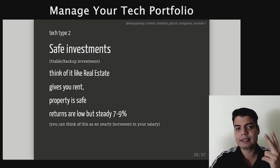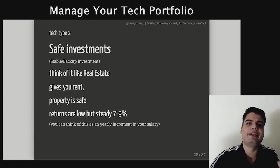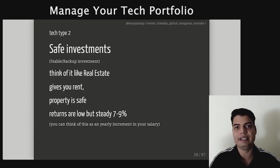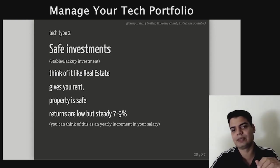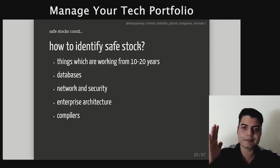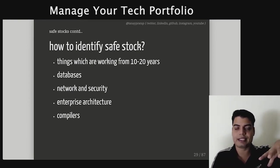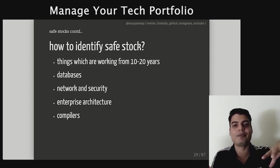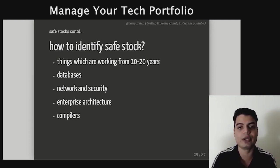The type 2 investment is safe investments — like stable backup investment. Think of it like real estate: it gives you rent, it's a physical property, it will never go away, and the returns are low but good — 7 to 9, sometimes 10%. How to identify safe stock in tech? It's things which have been working for 10 to 20 years. These are away from abstraction — like programming itself has been there for 50 years. Think databases, network and security, enterprise architecture, compilers, data structures, algorithms. These are safe stock. Learn this once and you are safe for the next 20 years.